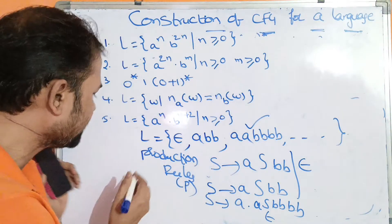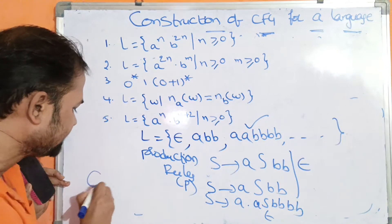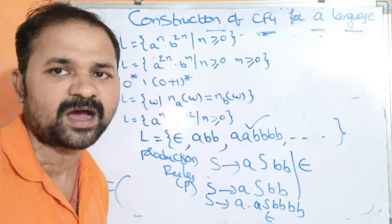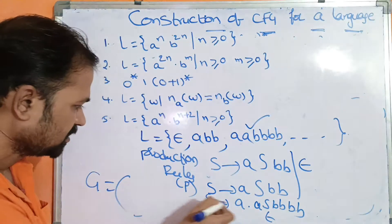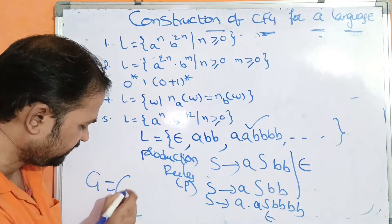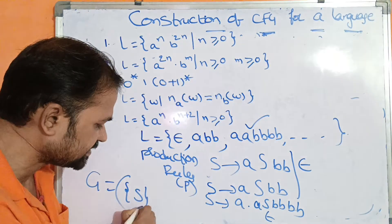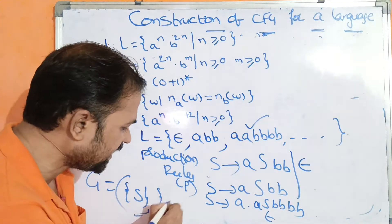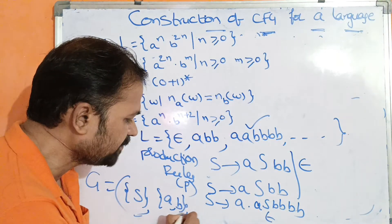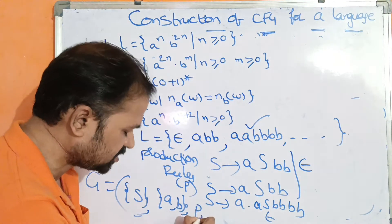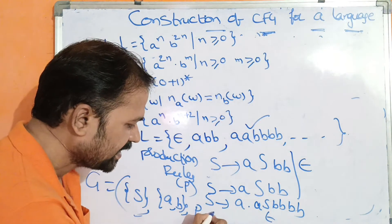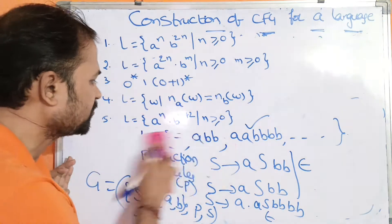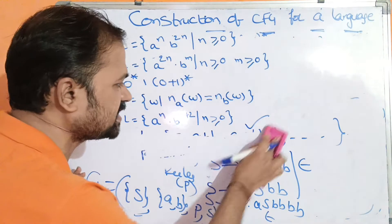So what is the grammar here? G is equal to (V, T, P, S), where V means non-terminals, T means terminals A and B, P is the production rules, and S is the starting symbol. This is the first example.